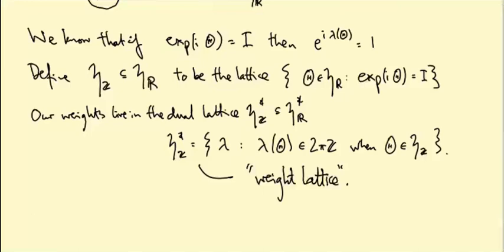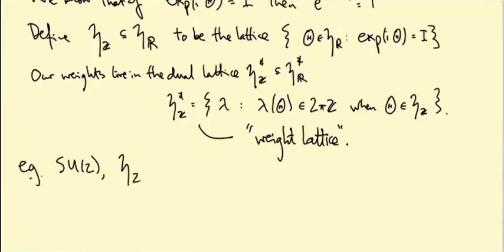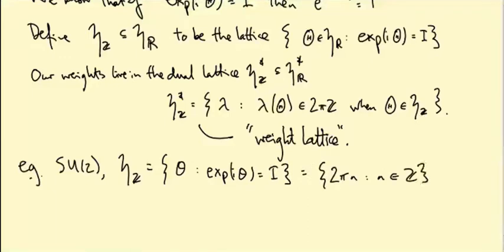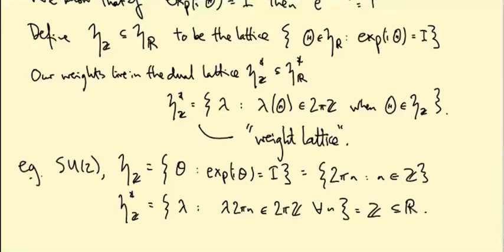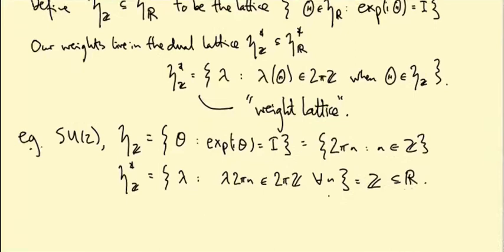So all the pictures we've been drawing - this dotted paper we had - that was the weight lattice. The dots were the weight lattice, and the weight diagrams were just a subset of the weight lattice. For example, for SU(2), little H_Z is the set of integer multiples of 2pi, and its dual H_Z^* is the set of numbers lambda such that lambda times 2pi*n is in 2pi times the integers for all n. So that is just the integers inside R. Our weight lattice for that example is really just the integers inside the real numbers.